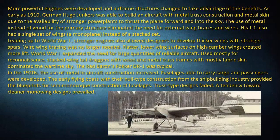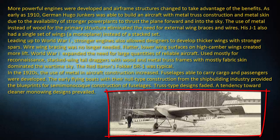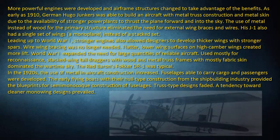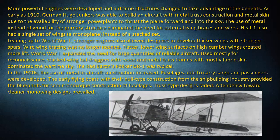More powerful engines were developed and airframe structures changed to take advantage of the benefits. As early as 1910, German Hugo Junkers was able to build an aircraft with metal truss construction and metal skin, due to the availability of stronger power plants. The use of metal instead of wood for the primary structure eliminated the need for external wing braces and wires. His J1 also had a single set of wings — a monoplane. Leading up to WWI, stronger engines also allowed designers to develop thicker wings with stronger spars. Wire wing bracing was no longer needed, and flatter, lower wing surfaces on high camber wings created more lift.